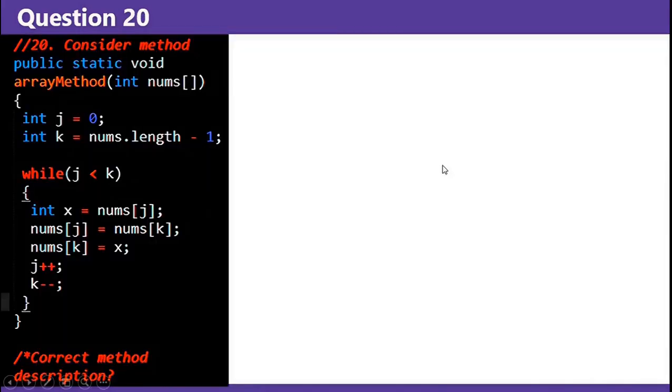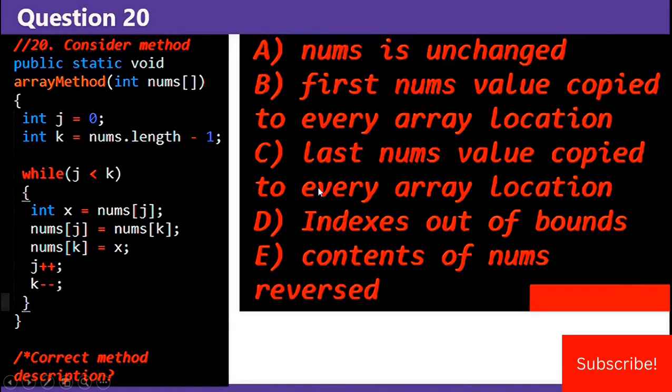Question 20 is a variation of the swap algorithm, where j starts at the beginning, k starts at the end, and if you swap the values from two different places, you reverse the array. Therefore, the answer is C. Ciao.